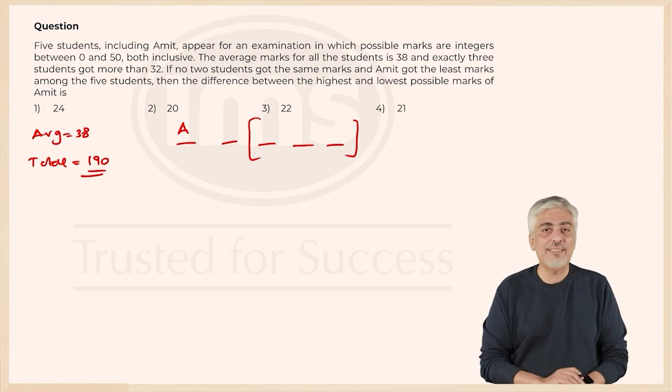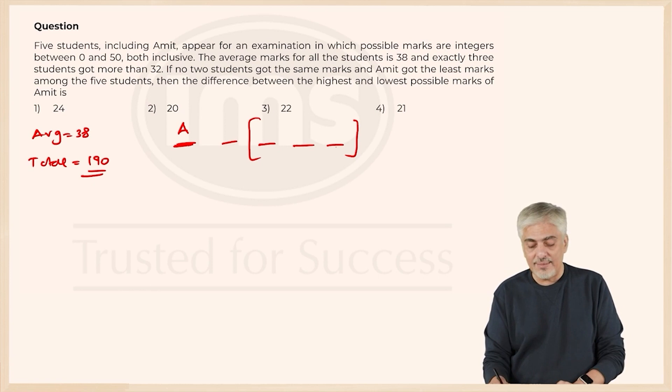So what is the lowest Amit can get? When I want Amit to get the lowest, these 3 I will make them as high as possible. So the best person can get 50, the second best person can get 49, third best person can get 48.